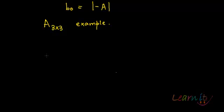In the previous video we saw that the constant term V0 is actually equal to the determinant of minus A, where A is your original matrix. Now I just want to reaffirm it by using a 3 by 3 example.